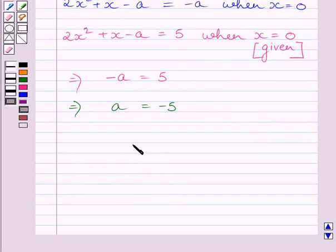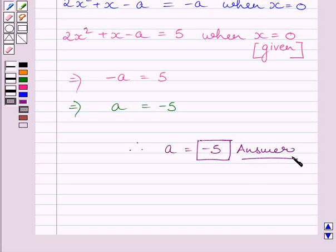So the required value of A equals -5. This is our required answer. This completes the session. Hope you understood the solution. Take care and have a nice day.